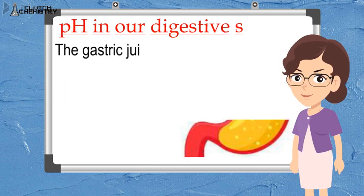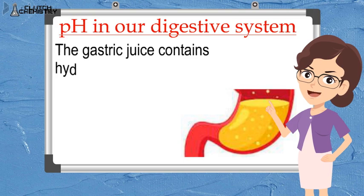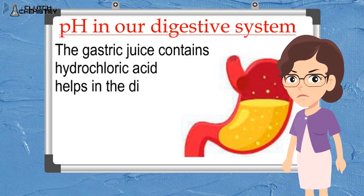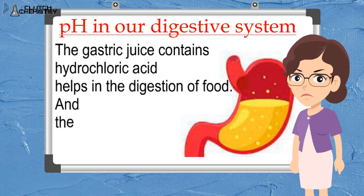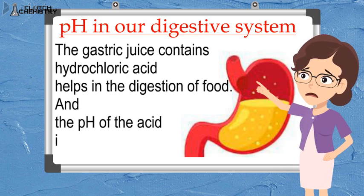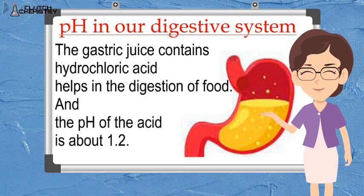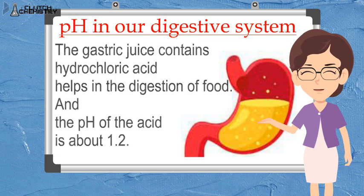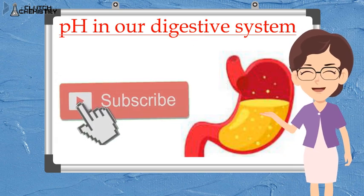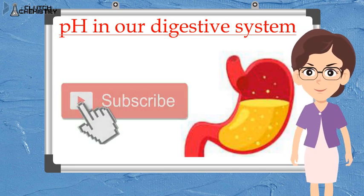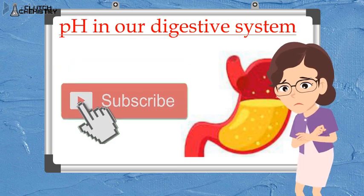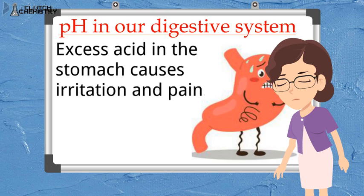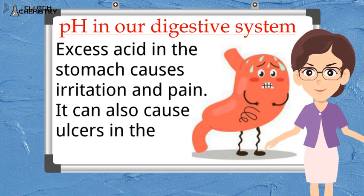Now if we look further at our digestive system, our stomach's gastric juice contains hydrochloric acid with a pH of around 1.2, which is quite acidic. It works to digest food during digestion. But sometimes, due to indigestion, the stomach produces too much acid, which causes pain and irritation, and can also cause ulcers in the digestive system.